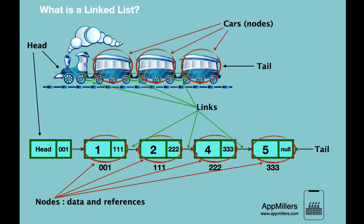The location of node 4 is 222, so 222 is stored in node 2, which gives node 2 a reference to node 4 via its physical location. So when we visit the first node, we know exactly where the second node is in memory because the first node stores the second node's location. The last component is the tail, which is a reference to the last node — we store the physical location of the last node.